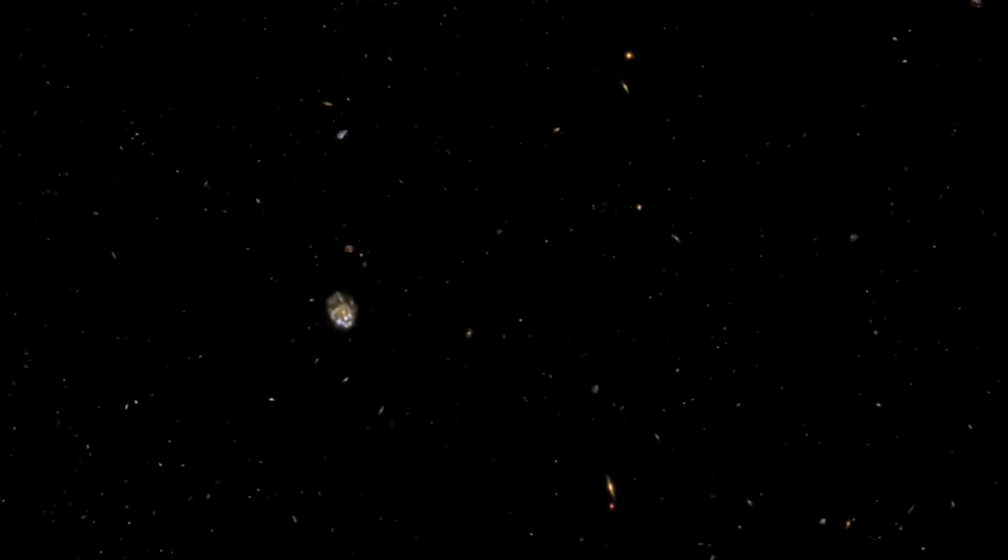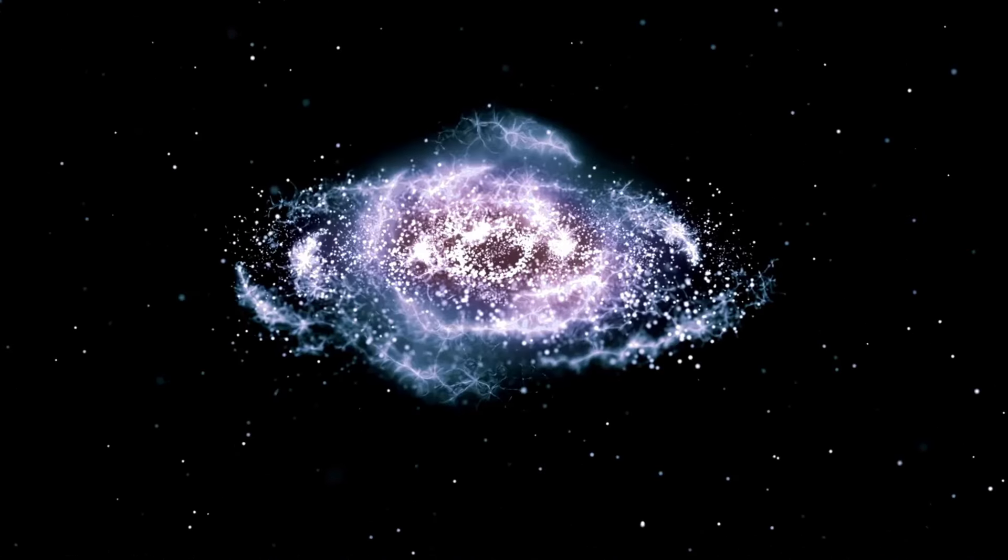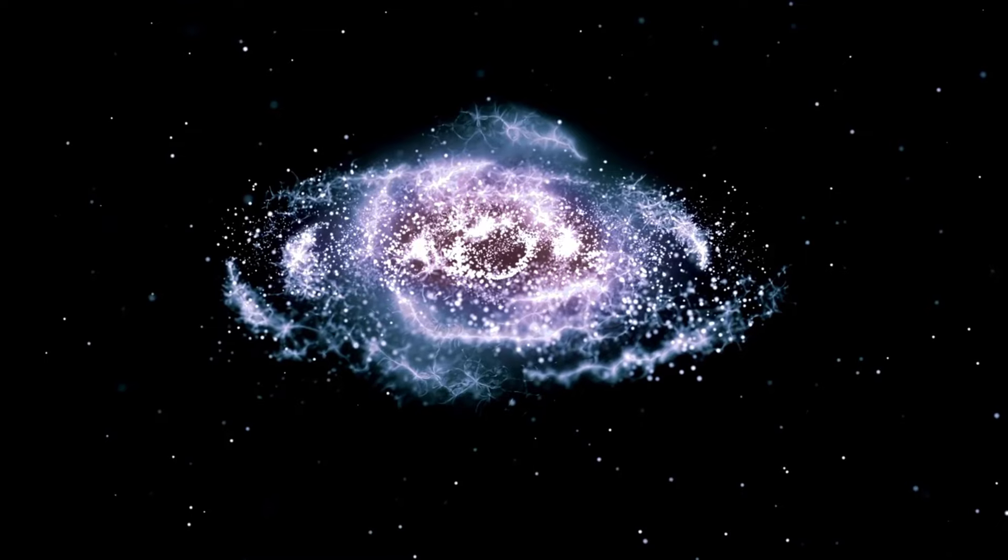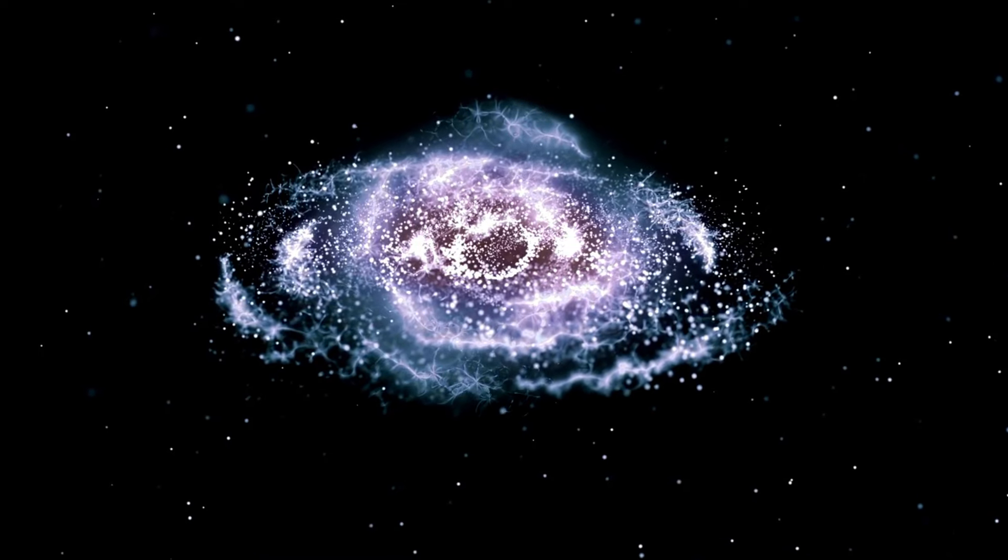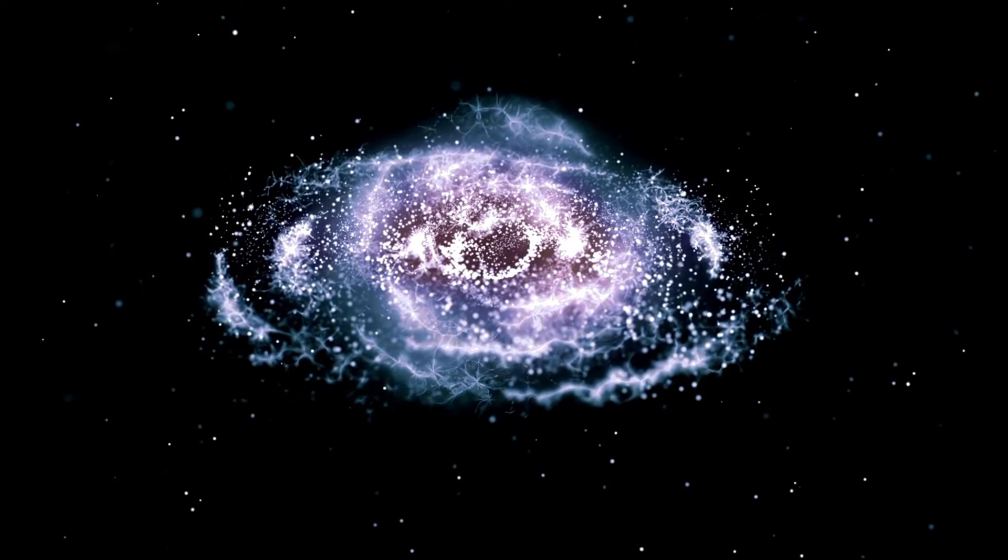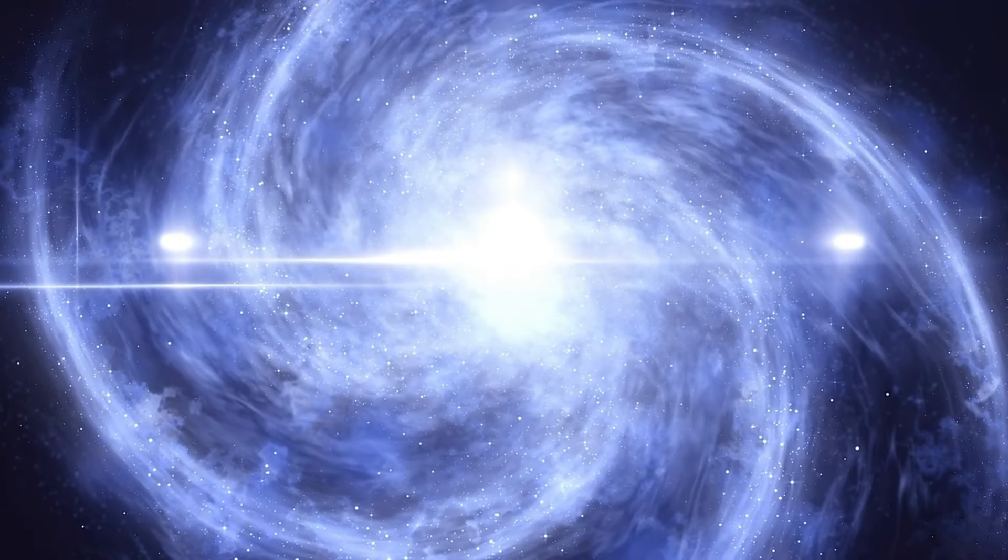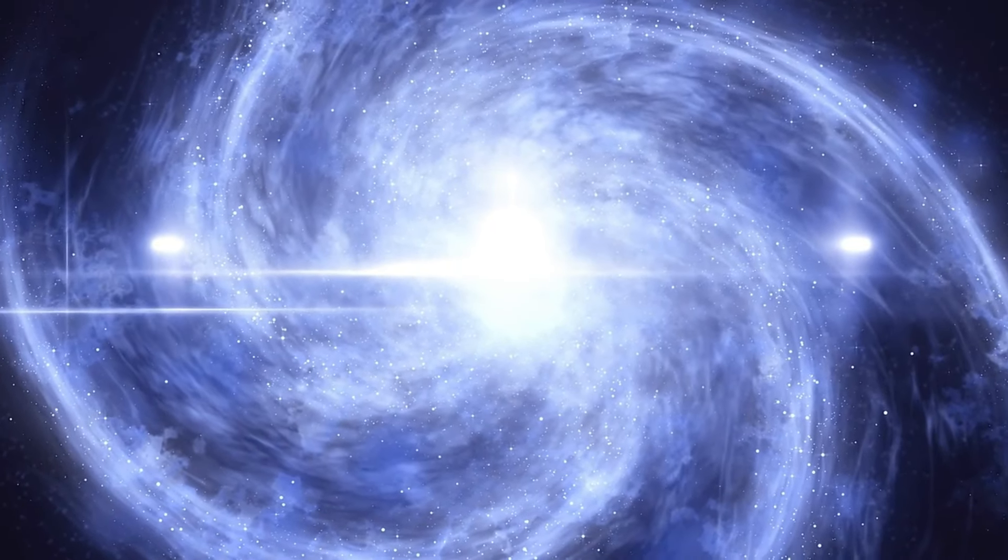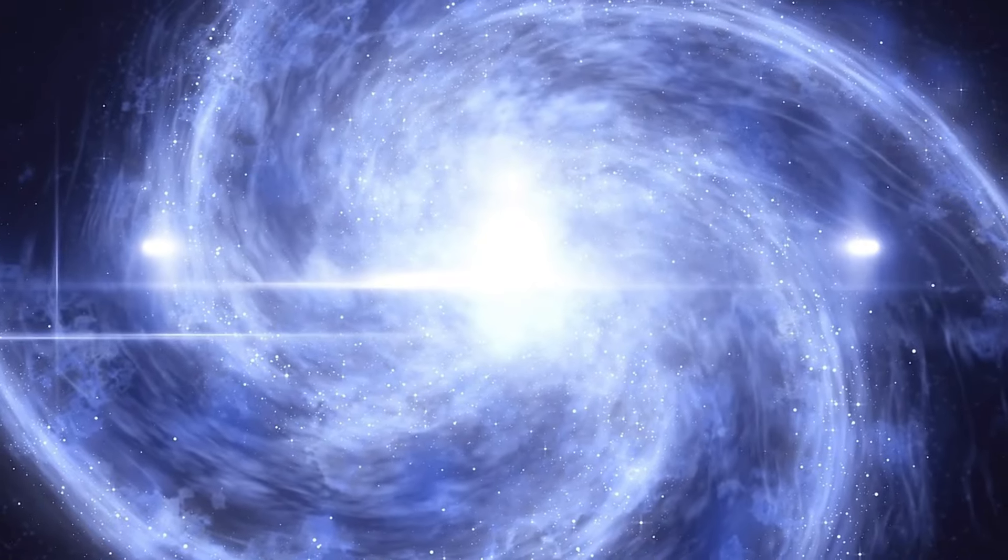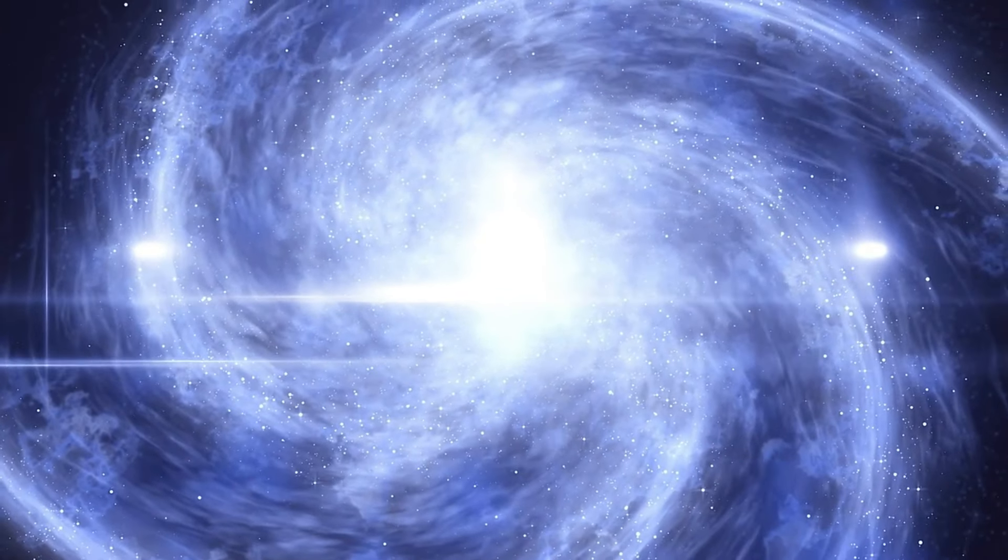Einstein's theory of general relativity has huge implications for how the universe is structured. At first, he added something called a cosmological constant to his equations since he thought the universe was static. However, when we found it is expanding, he referred to this as a serious mistake. The idea of an expanding universe based on general relativity is a critical piece of the Big Bang theory, which explains how the universe started.